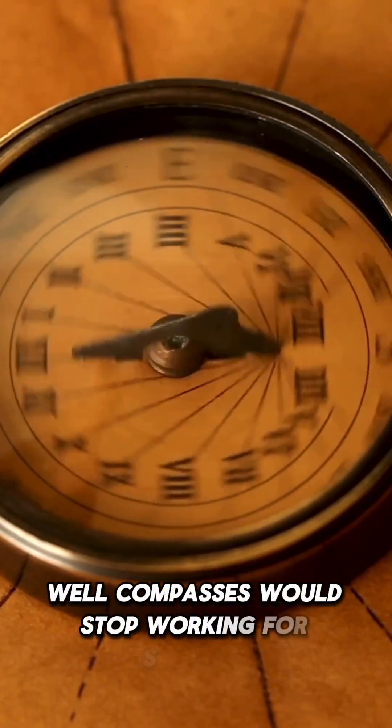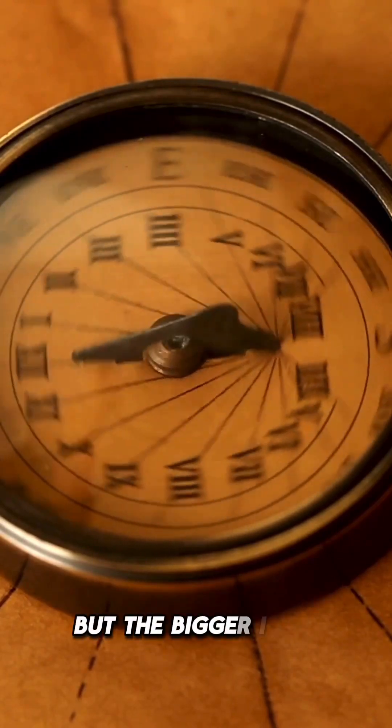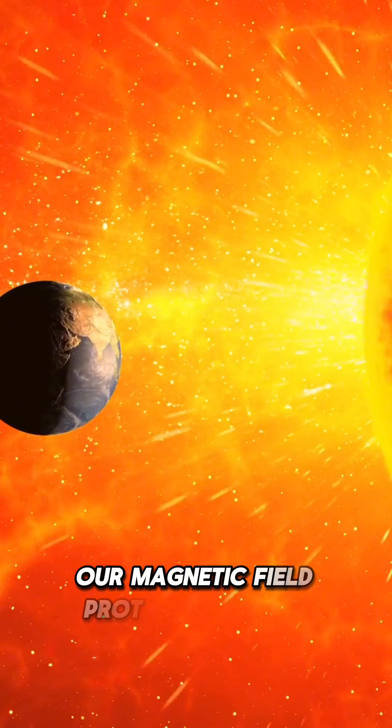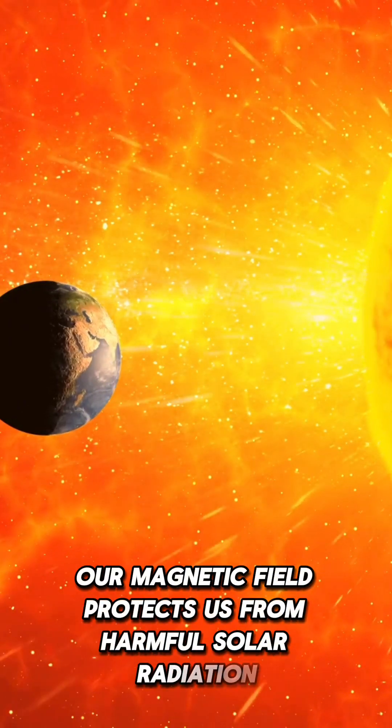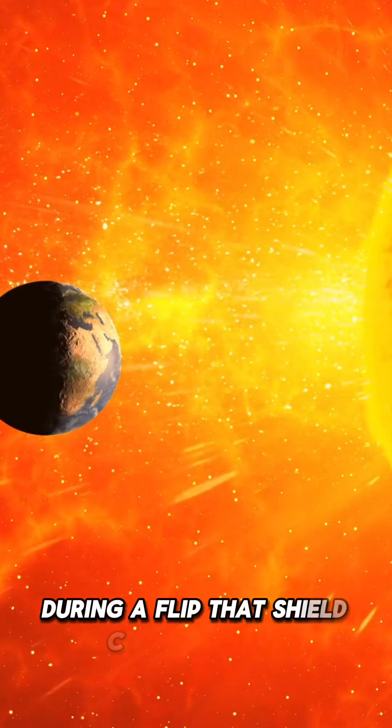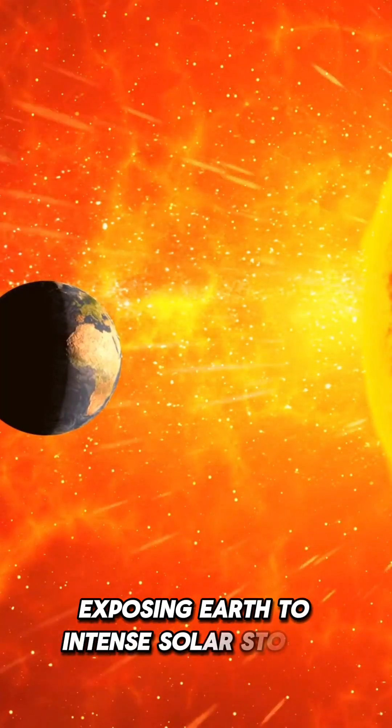Well, compasses would stop working, for starters. But the bigger issue? Our magnetic field protects us from harmful solar radiation. During a flip, that shield could weaken, exposing Earth to intense solar storms.